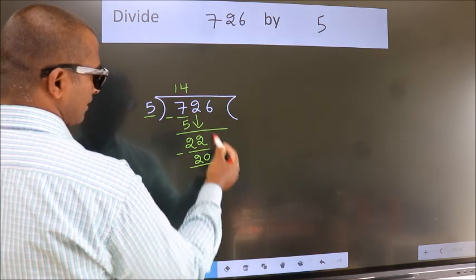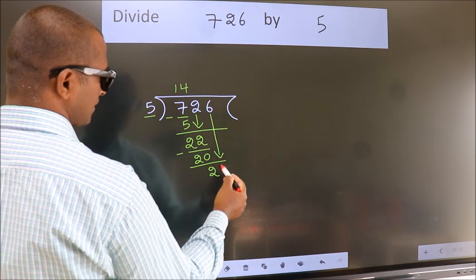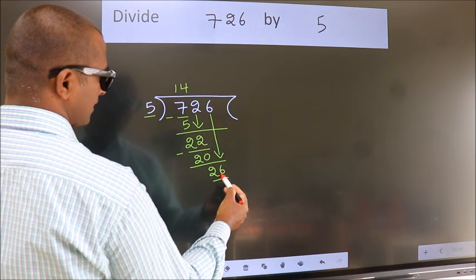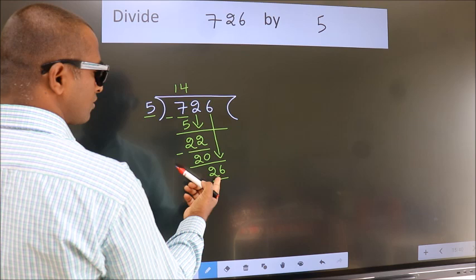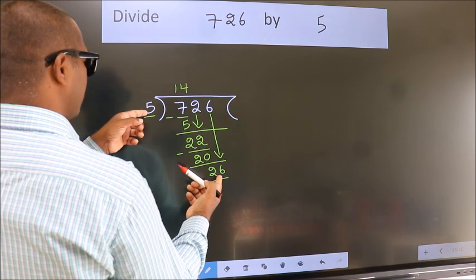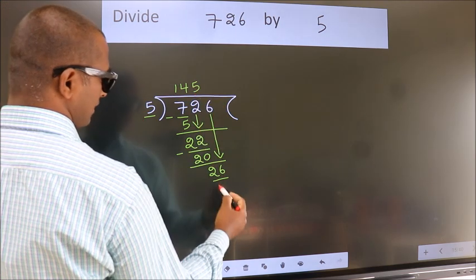After this, bring down the beside number. So, 6 down. So, 26. A number close to 26 in 5 table is 5 fives 25.